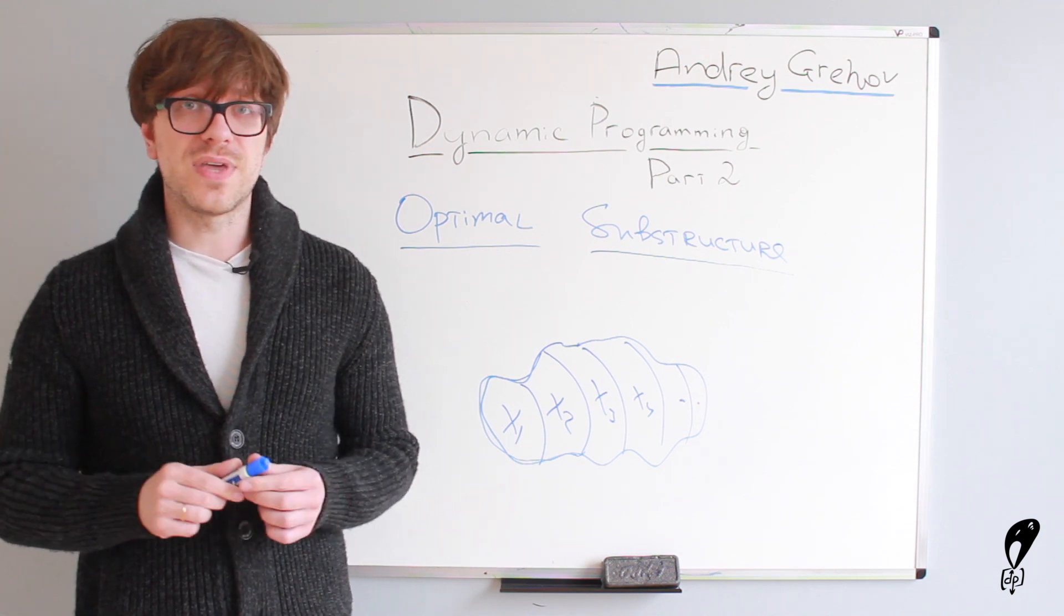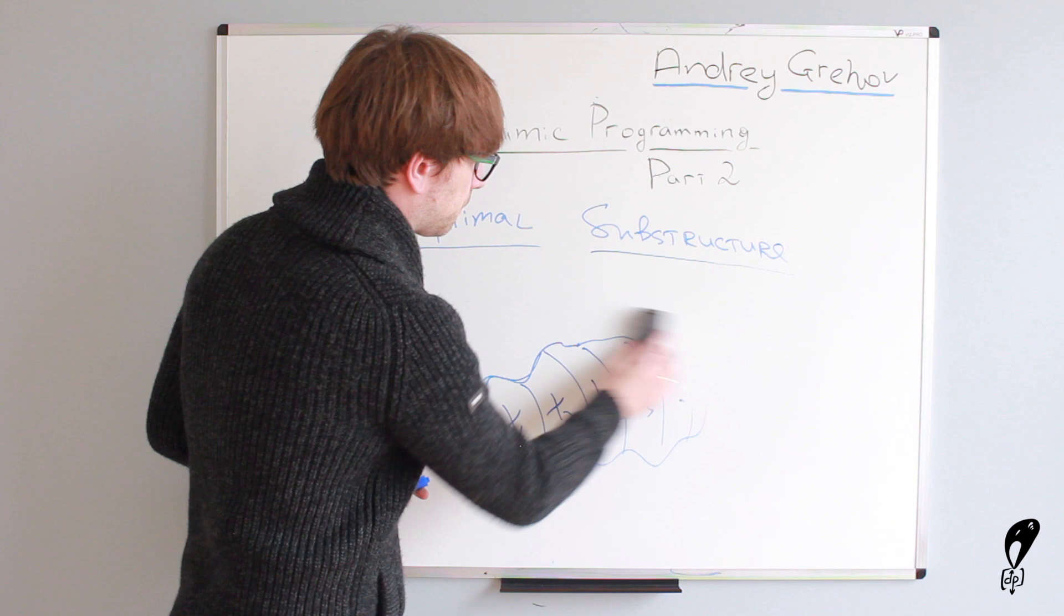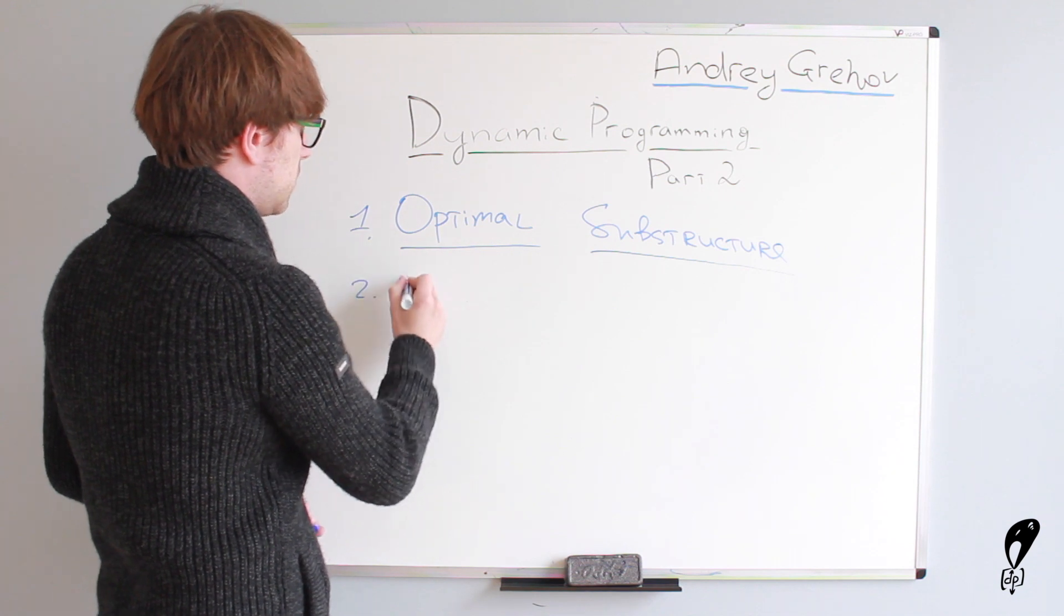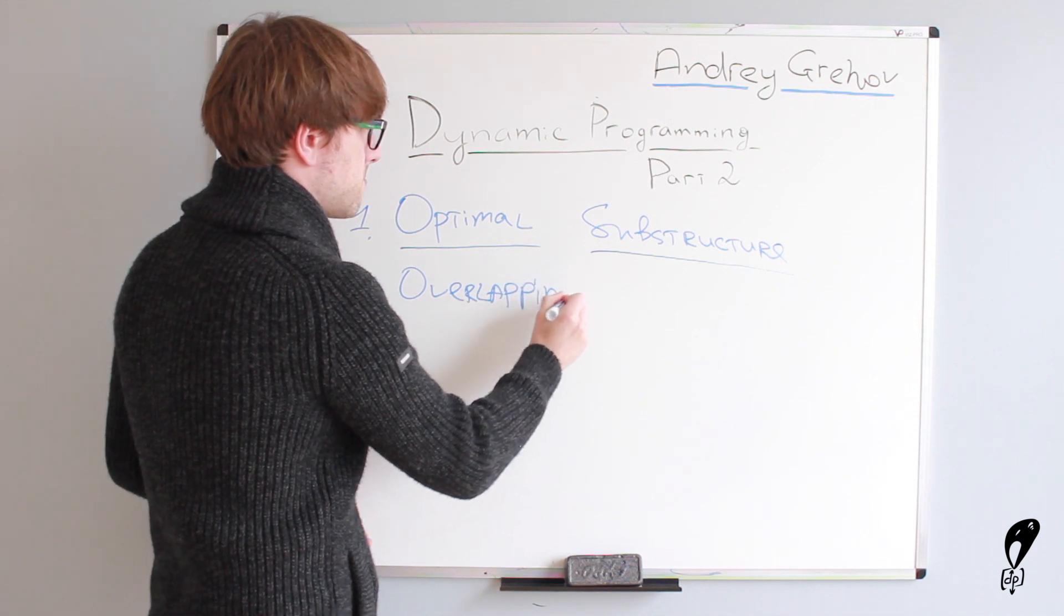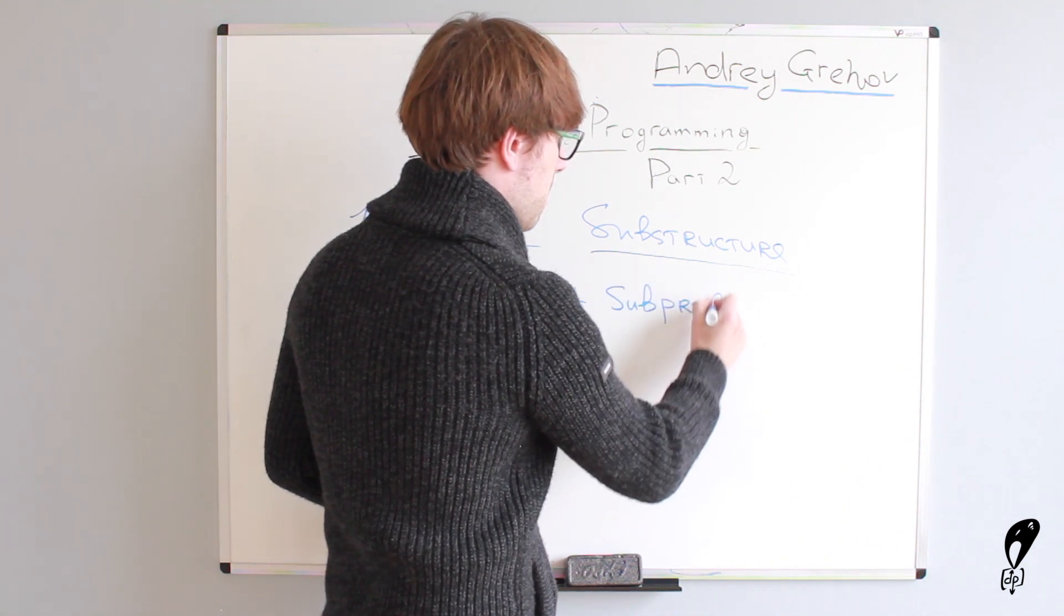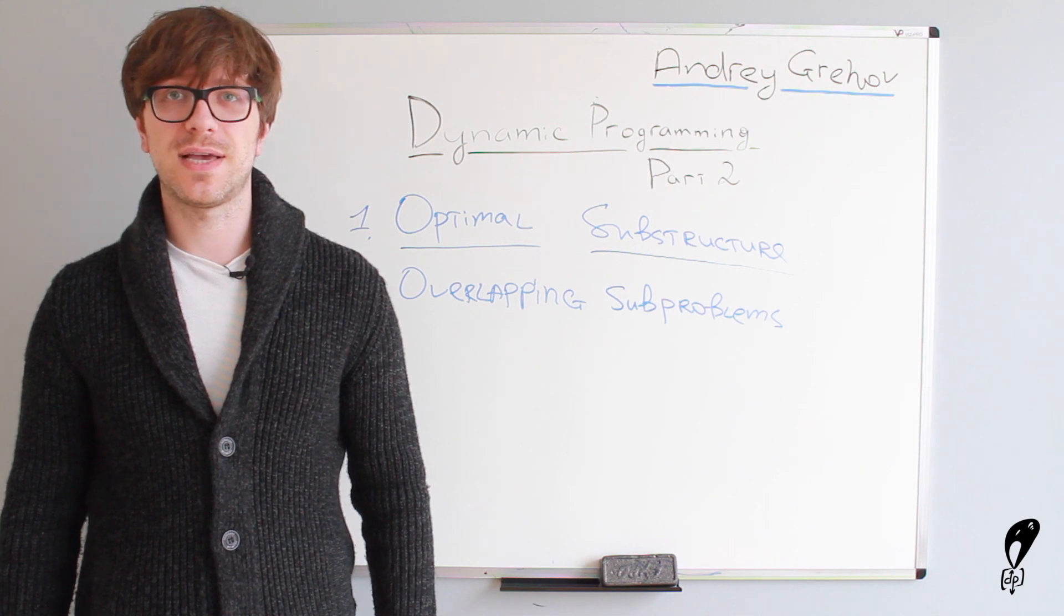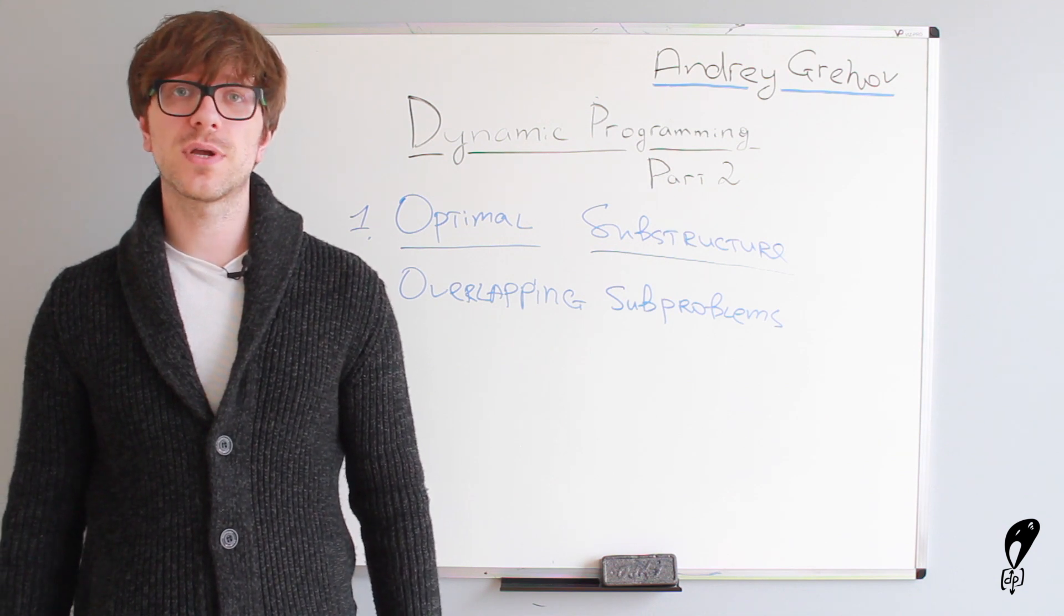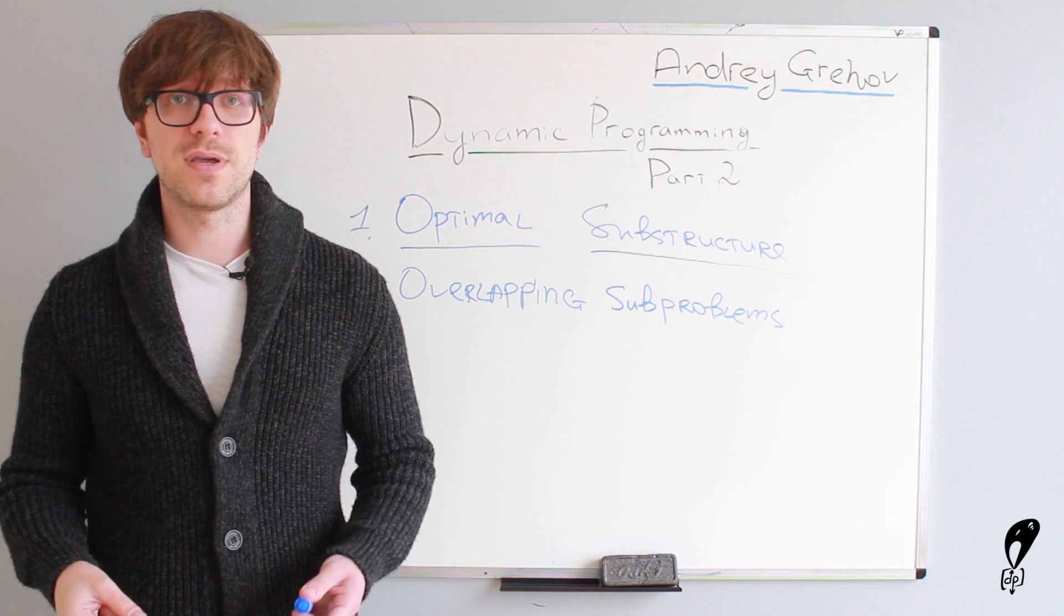Okay, so the second property that we need to know about is called overlapping sub-problems. Let's write it down. So, this is the first one and the second one is overlapping sub-problems. This one is pretty easy to understand. Basically, when you break a problem into many sub-problems, you will notice that sometimes you need to recalculate some work multiple times.